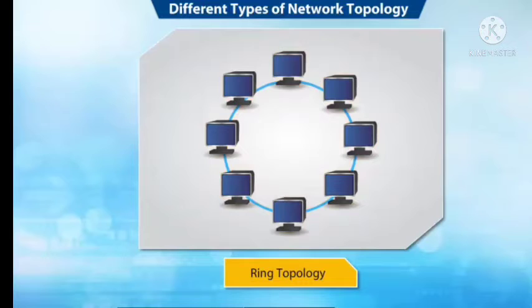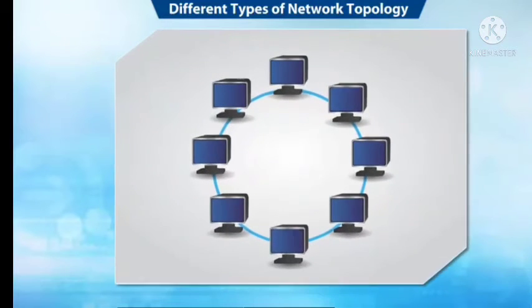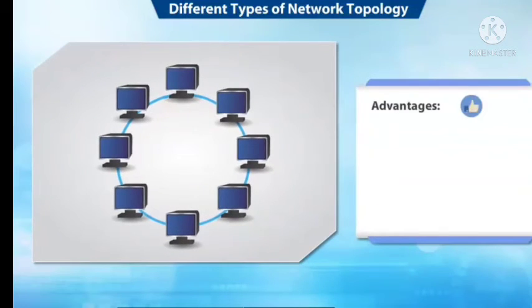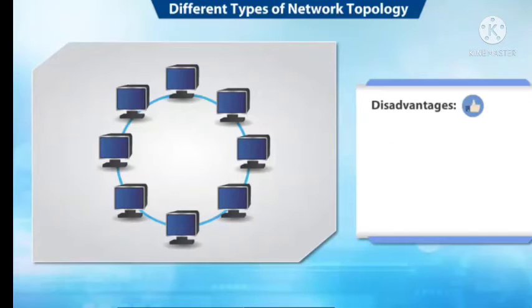The next type is ring topology. Just like the closed-ended shape of a ring, the computers in this network are connected in a circular form or closed loop. Messages are transmitted in one direction, either clockwise or counterclockwise. Each computer is directly connected to the next computer, forming a single pathway for signals through the network. Ring topology is simple and easy to set up. The advantages are that the cost is low, it is easy to add new nodes, and the network is robust. The disadvantage is that when one computer fails, the entire network goes down.